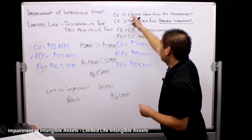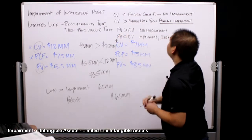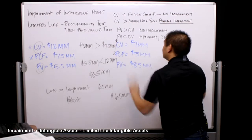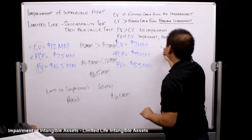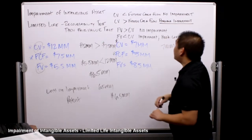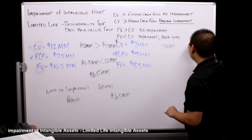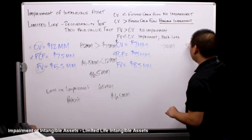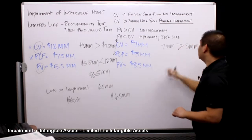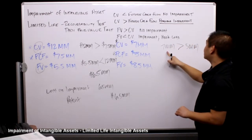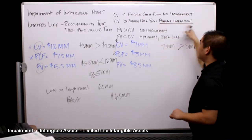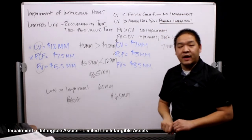Same tests as before with different numbers. Starting with step one — the recoverability test — we compare carrying value and future cash flows. Carrying value is seven million and future cash flows are five million. Seven is greater than five, so the carrying value is greater than the future cash flows. That indicates a possible impairment.